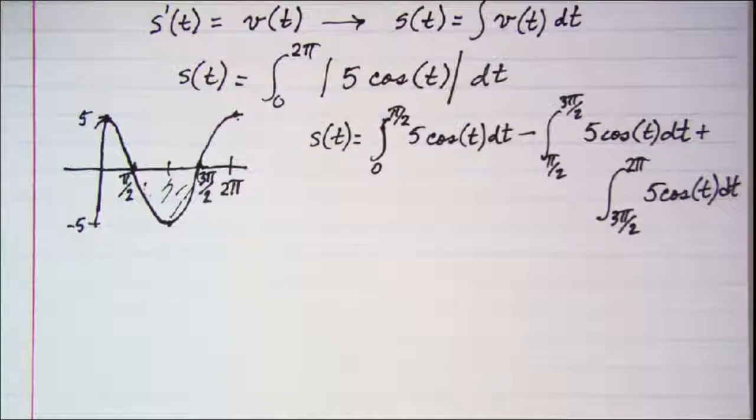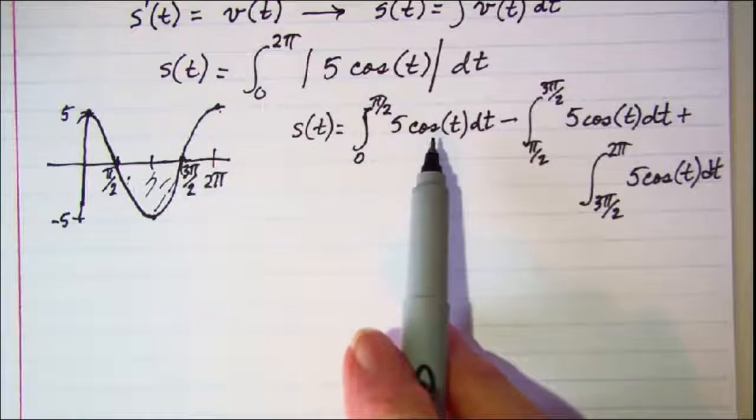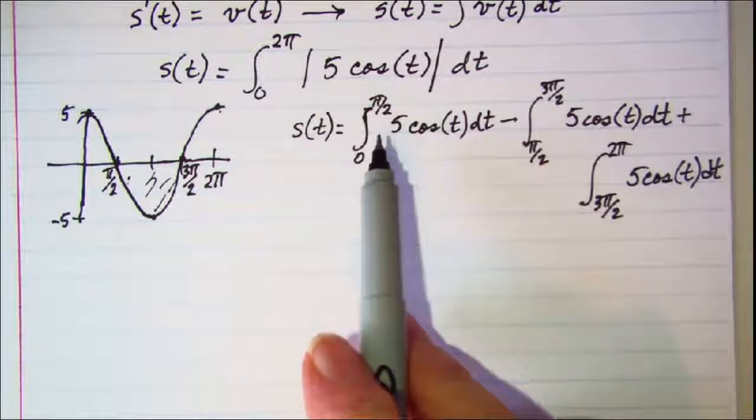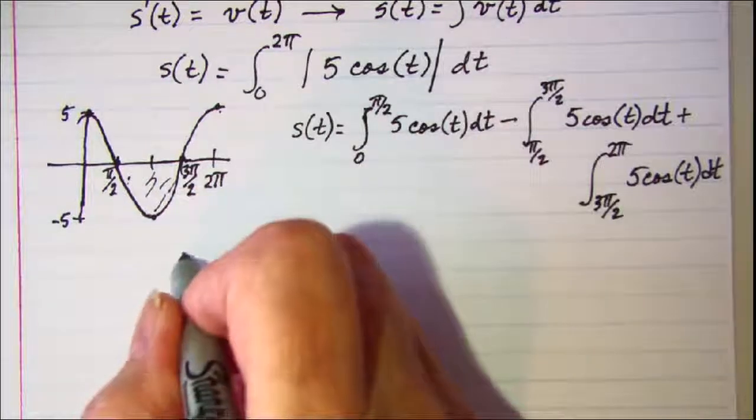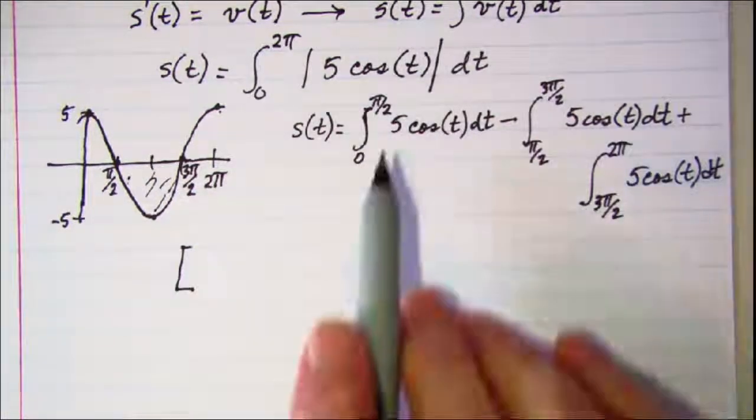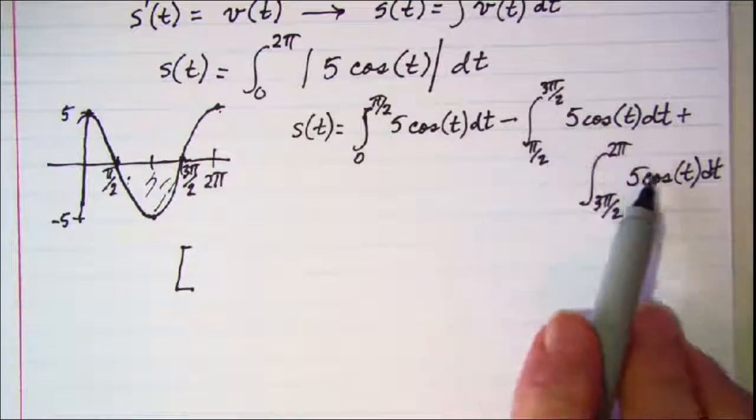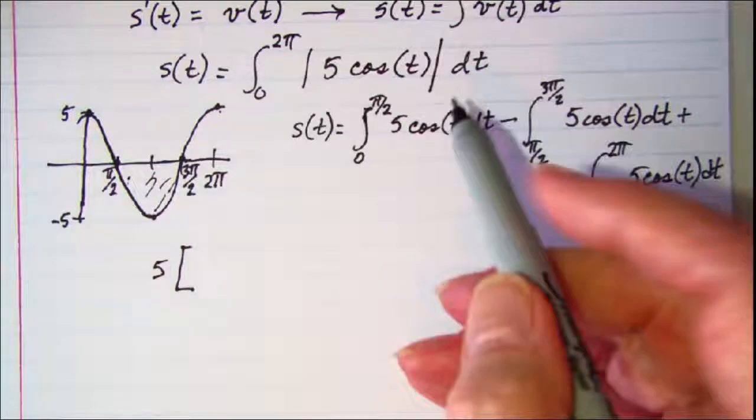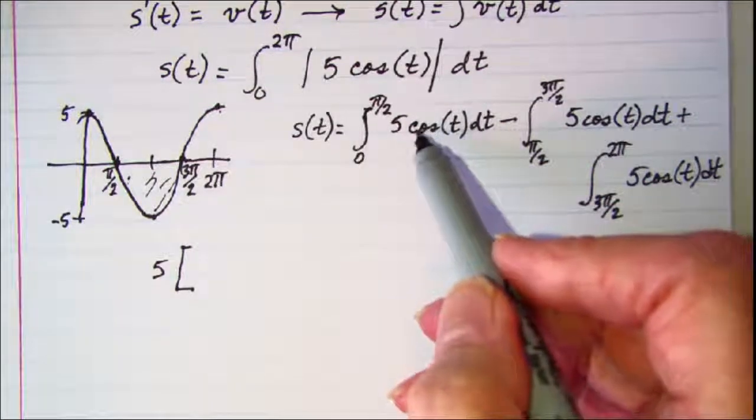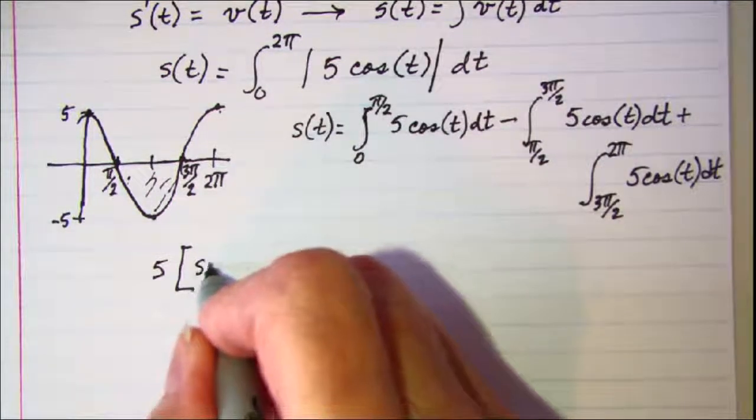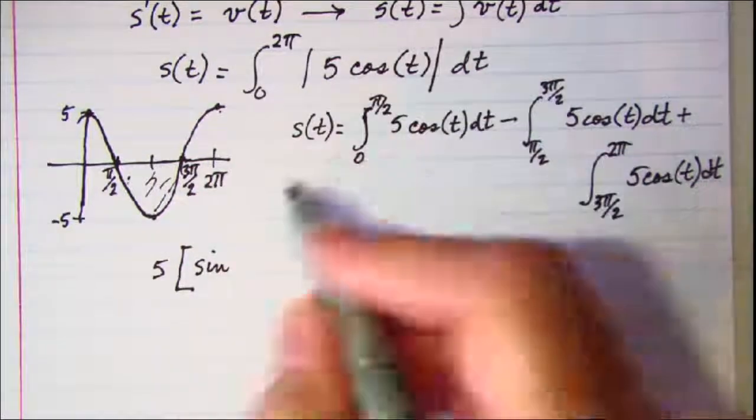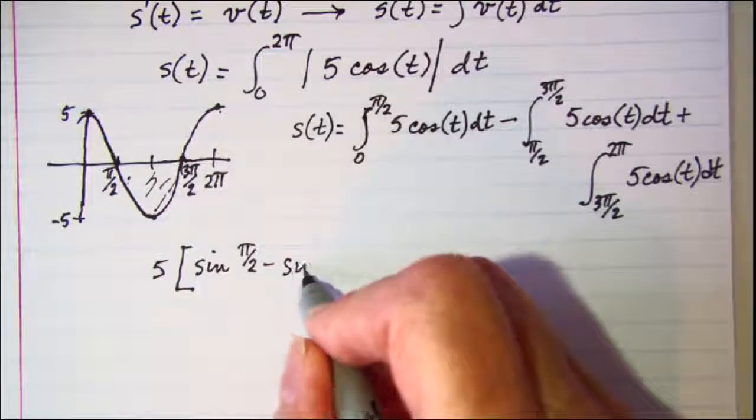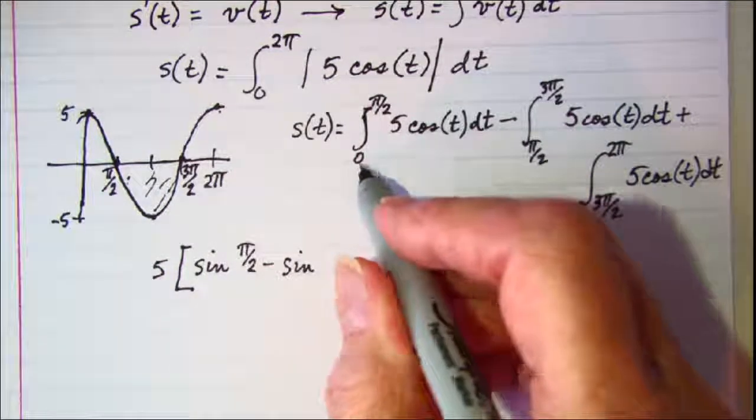Now we know that the integral of cosine is sine. For this first part, I'm going to factor out the 5 that's in all three parts. So we have the sine of pi over 2 subtract the sine of 0 which is my lower limit of integration.